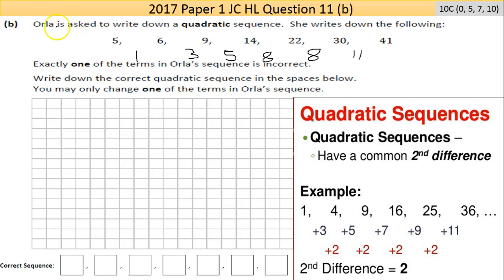So what's the question asking? Orla is asked to write down a quadratic sequence. She writes down the following. Exactly one of the terms in Orla's sequence is incorrect. Write down the correct quadratic sequence in the space below. You may only change one of the terms in Orla's sequence.